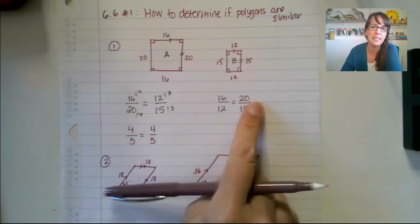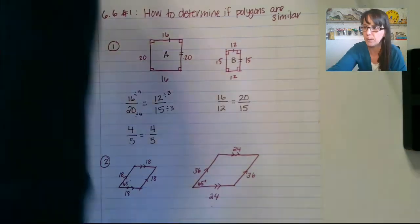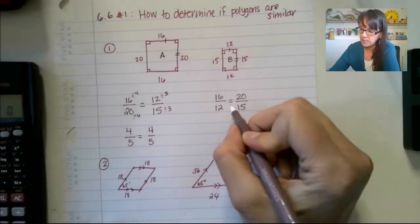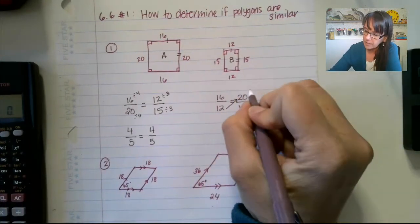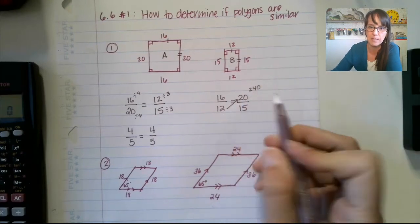Okay, and now again, you could reduce these down if you wanted to and make sure that you get the same proportions. Another way, however, that you can do this is if you wanted to cross multiply, cross product is what it's called. So if we have 12 times 20, that's going to give us 240, right? Because 12 times 2 is 24 plus a 0.